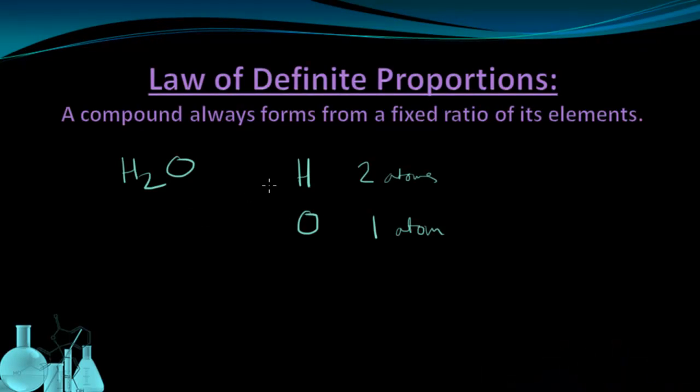But the law also holds true for the mass. So if we look at the mass of hydrogen, it's two AMUs, because it's one AMU per hydrogen and there are two of them. The mass for oxygen is going to be 16 AMUs.